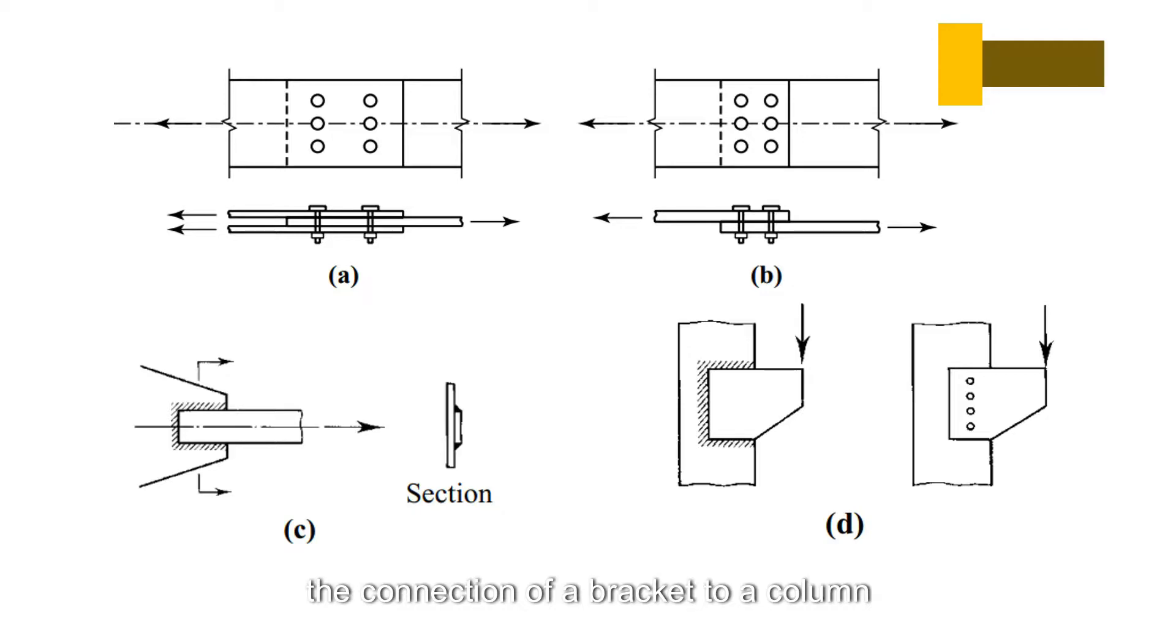The connection of a bracket to a column flange, as in figure D, whether by fasteners or welds, subjects the connection to shear when loaded as shown.